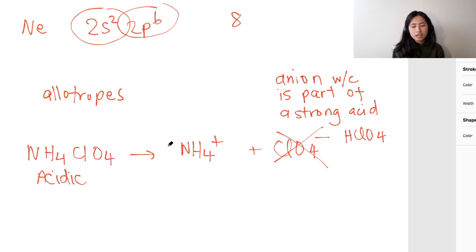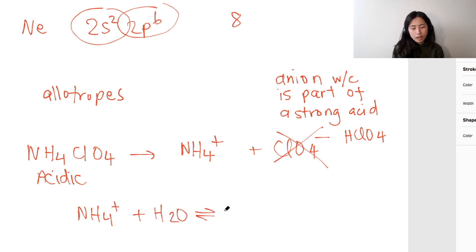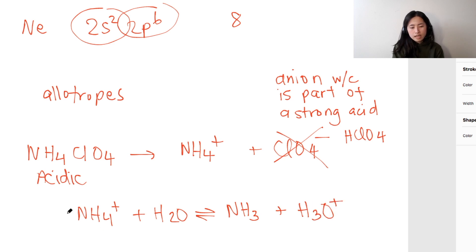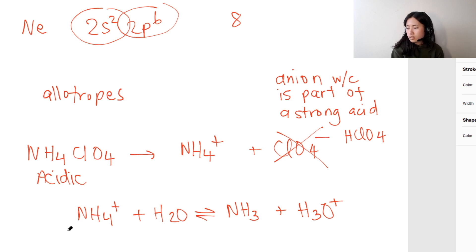The only thing that participates in hydrolysis is NH4+. NH4+ in the presence of water, under equilibrium conditions, gives NH3, which is the conjugate base, plus H3O+. As you can see, NH4+ is part of an acidic environment because it's an acid, therefore this turns the solution into an acidic solution.